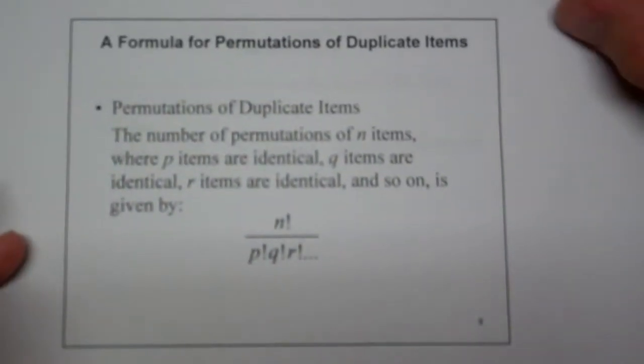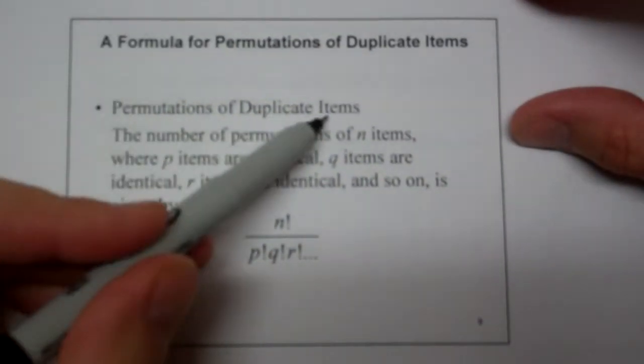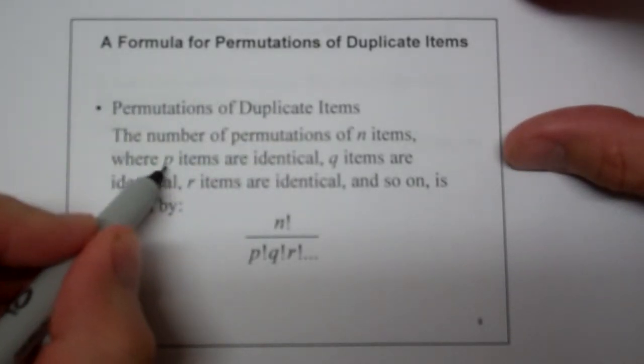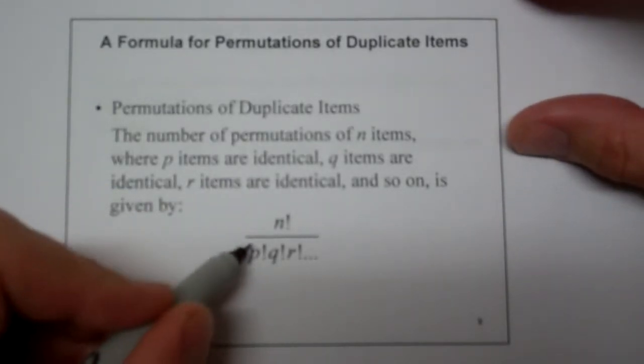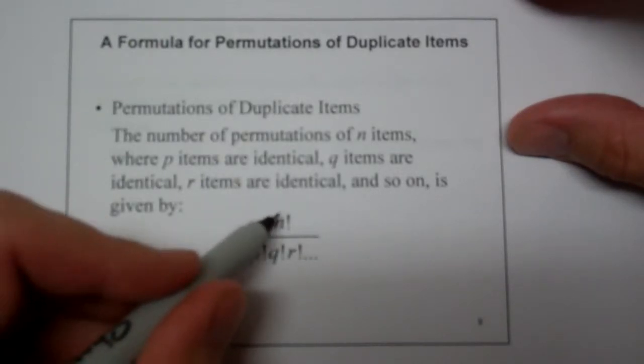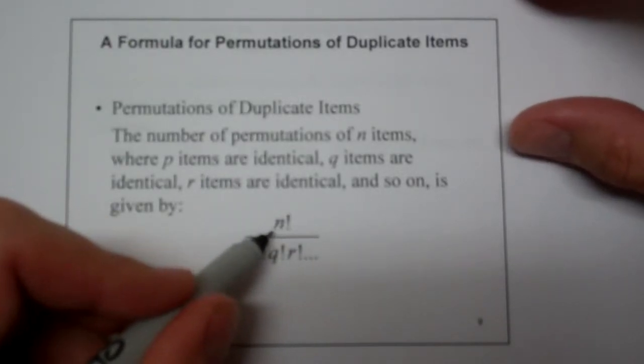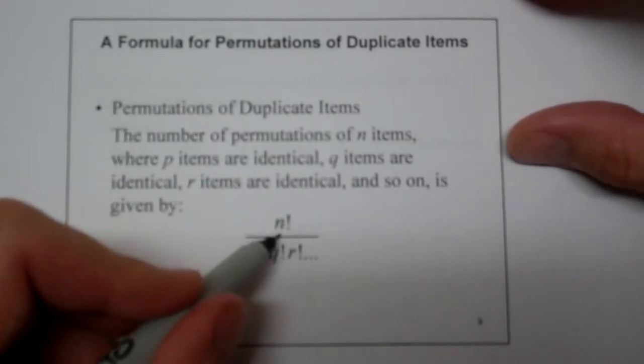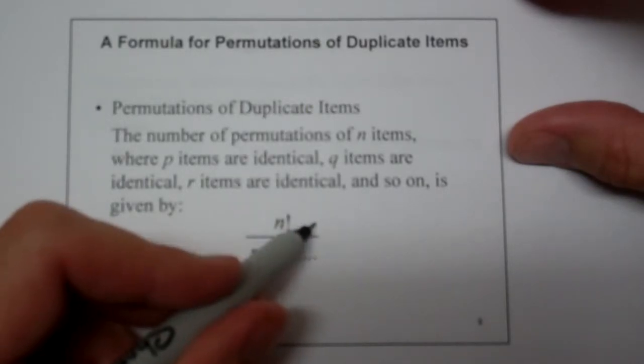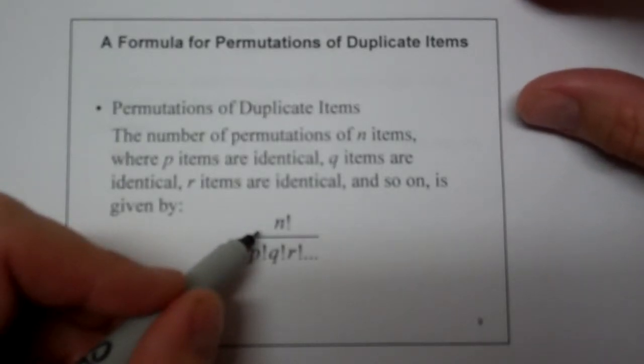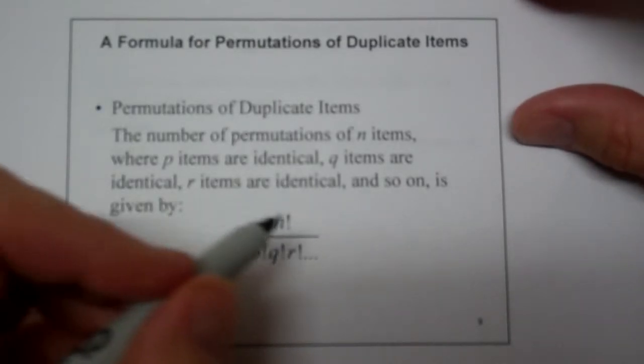Well, the idea is that permutations of duplicate items require the P items that are identical go on the bottom as a factorial. Why are they going on the bottom? They're going on the bottom because they're going to divide out of the total number of possible options. Think about that. If I had a thousand options up here and I had two letters that were the same, well, those two letters could go in either of the spots of the thousand and so really you would only have like 500 options because of the doubling of the letters.